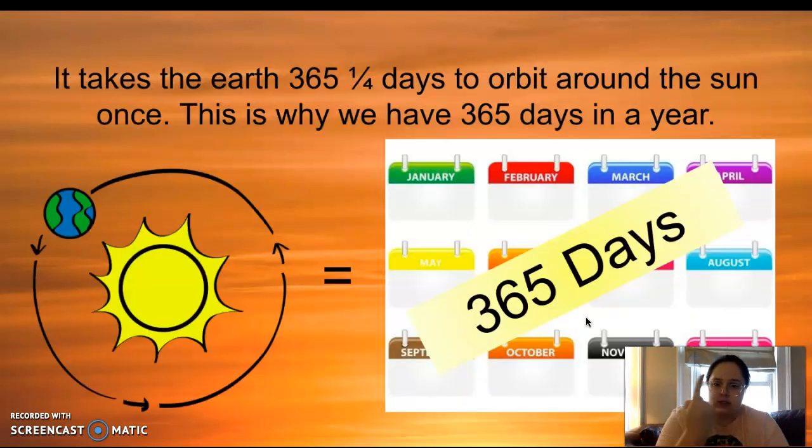So whereas it takes a day to turn like this, it takes a year to revolve. It takes the Earth 365 and one-fourth days to orbit around the sun. This is why we have 365 days in a year. And fun fact, that one-fourth is actually called the leap year. So every four years, we have a 29th day in February. And that is because of that one-fourth day to make it even as we go around the sun.